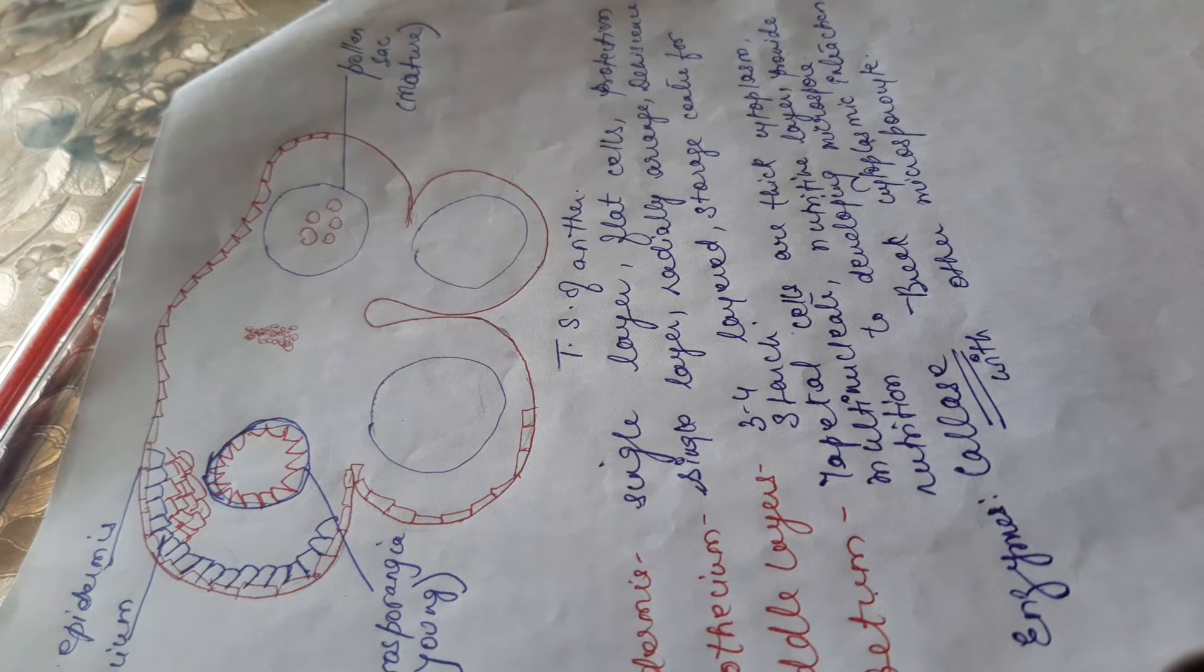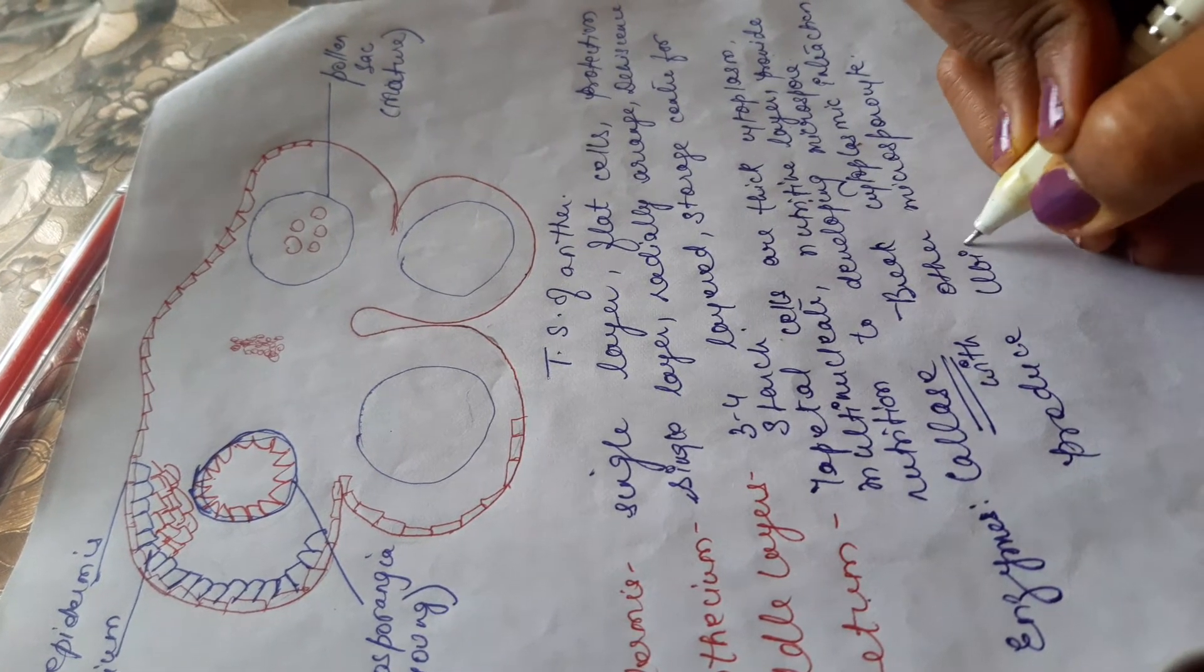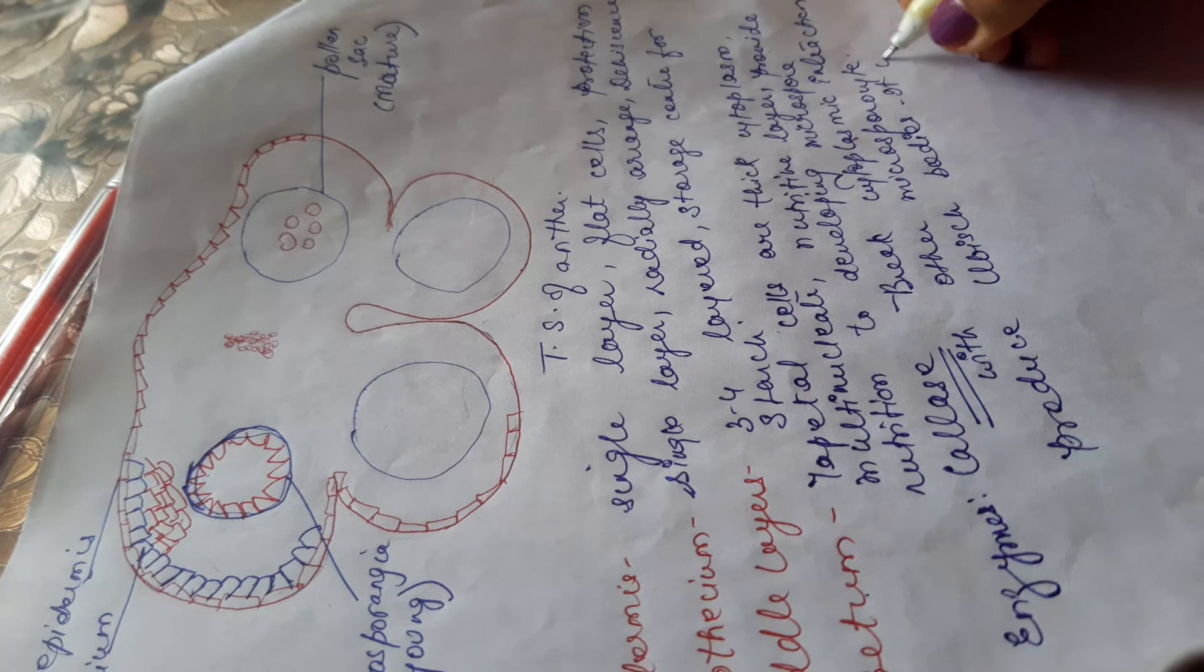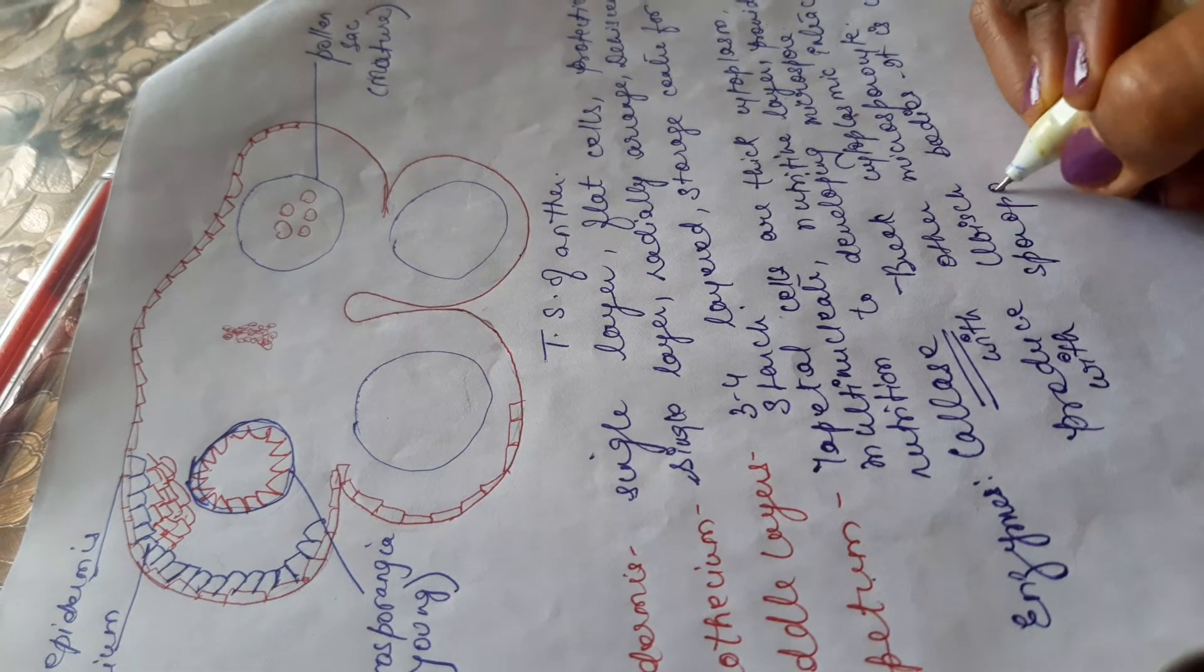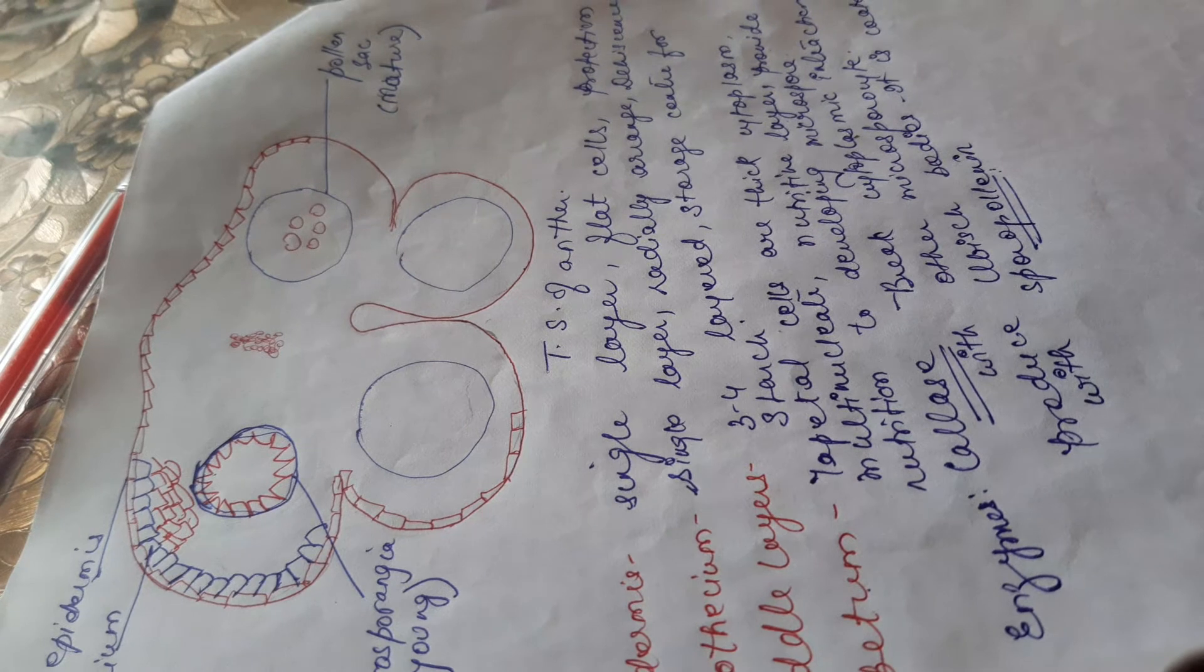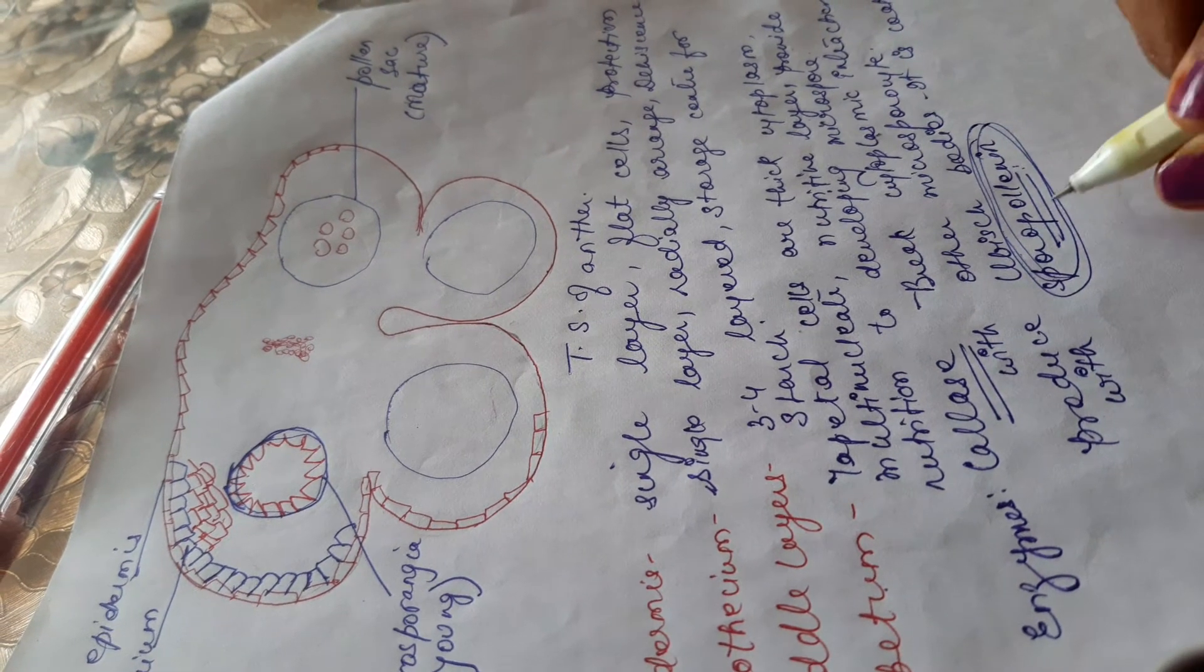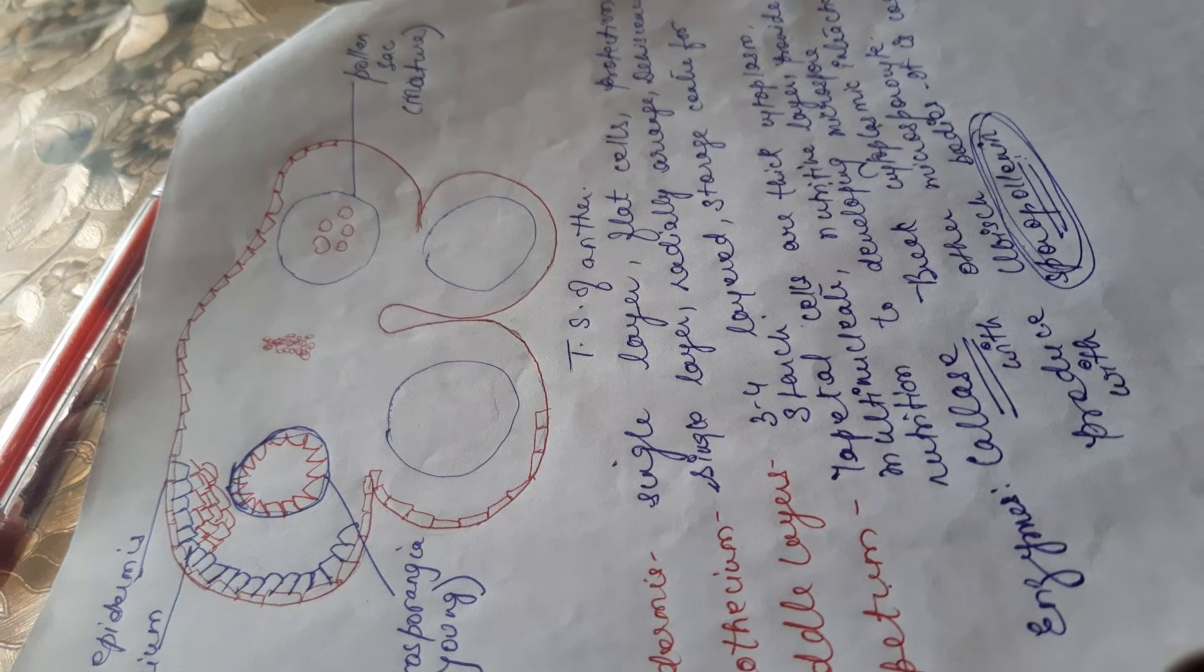One more important function - it also produces ubisch bodies. What are ubisch bodies? Ubisch bodies are coated with sporopollenin. Sporopollenin is the outer exine layer of pollen grains. The exine is formed by sporopollenin, which comes from ubisch bodies. They are very resistant to oxidation and leaching.